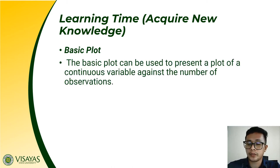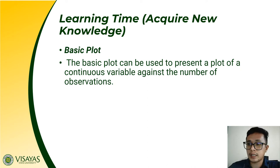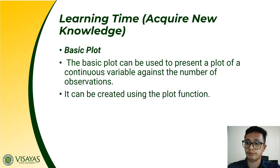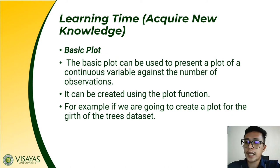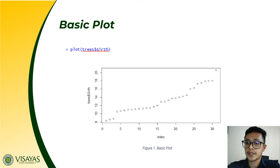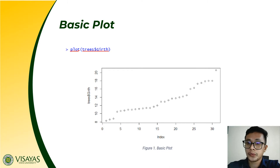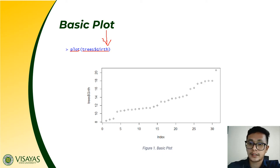One of the plots we'll discuss today is the basic plot. The basic plot is used to present a continuous variable against a number of observations, and it can be created using the plot function. For example, to create a plot for the girth variable of the trees dataset, we use the plot function specifying the variable and the dataset.